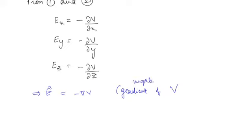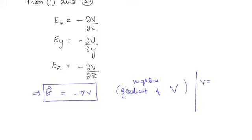This means each component of the electric field is the partial derivative of the potential. So the electric field Ē = −∇V, the negative gradient of the potential. While the previous expression gives potential from the field (V = −∫ Ē · dl̄), this gives the electric field when potential is known: Ē = −∇V.